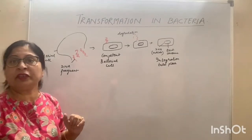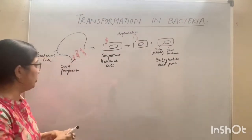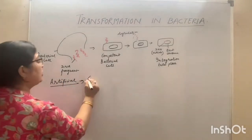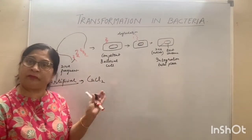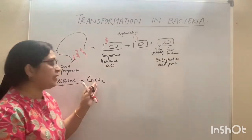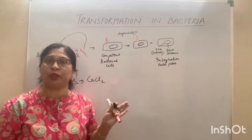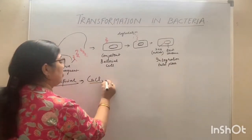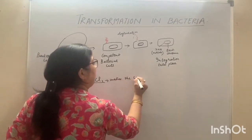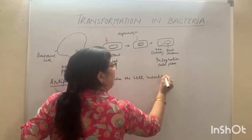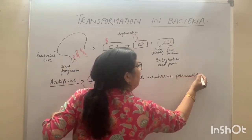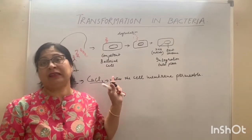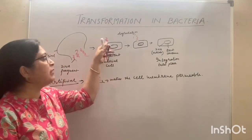Some bacterial cells are not naturally competent. In that case, artificially, the cell is treated with calcium chloride (CaCl₂) solution to make it artificially competent. However, this does not work well with linear DNA. Linear DNA and fragments of DNA will rapidly degrade, so chances of entry into the bacterial cell will be less.